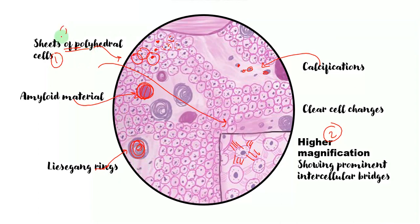Again going over this: sheets of polyhedral cells, granular eosinophilic cytoplasm, intracellular bridges, amyloid-like material, calcifications, and Liesegang rings.